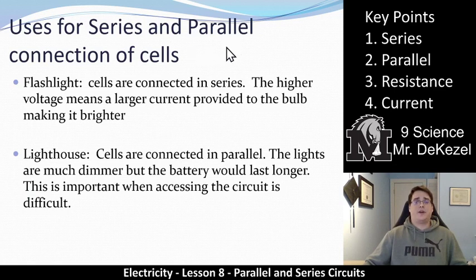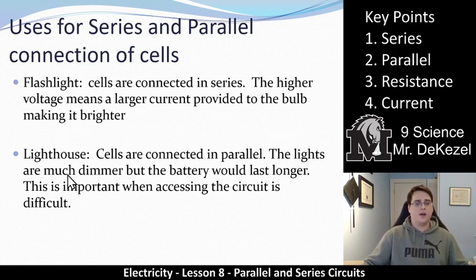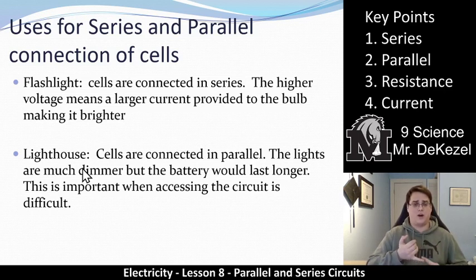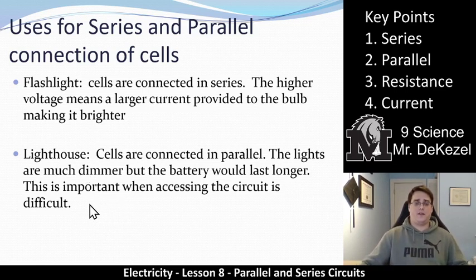For uses of series and parallel connections of cells: in a flashlight, cells are connected in series. You put batteries in one, two, three so that you get a higher voltage, and that higher voltage means more current, which means the bulb can be brighter. Compare that to a lighthouse, where you need constant light — you cannot have a time where the light is not working. So the cells are connected in parallel: the light is a little dimmer, but the battery lasts longer, and you can change one cell while the other keeps the lighthouse running. When you need constant power, parallel circuits are really handy.